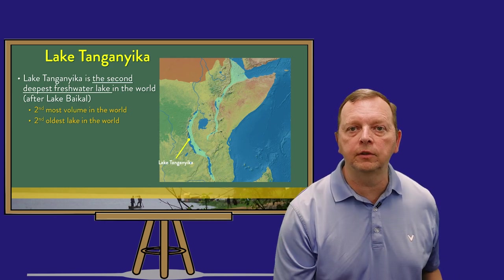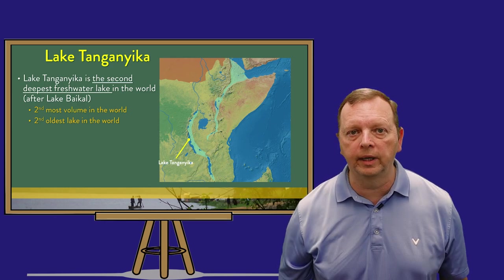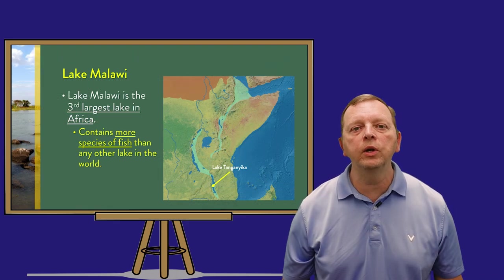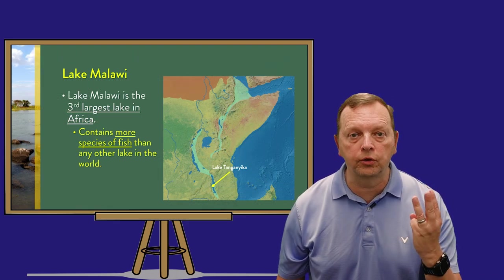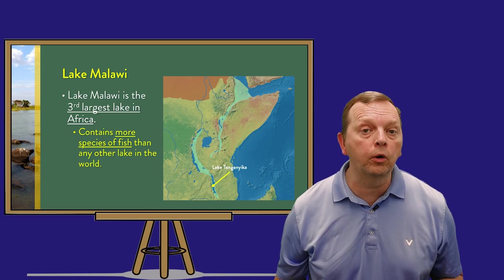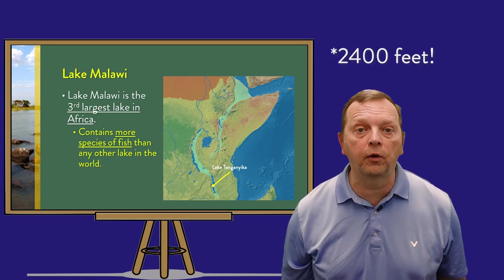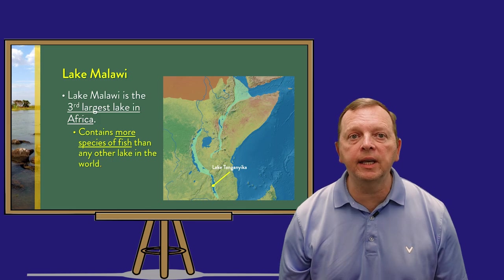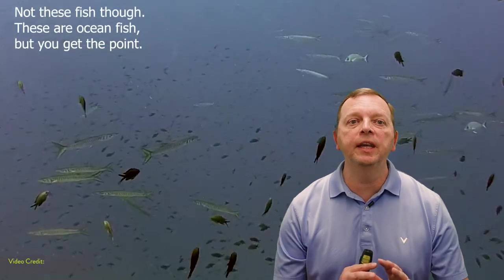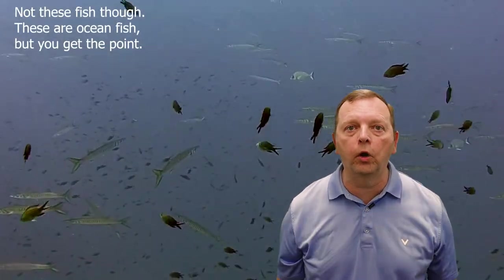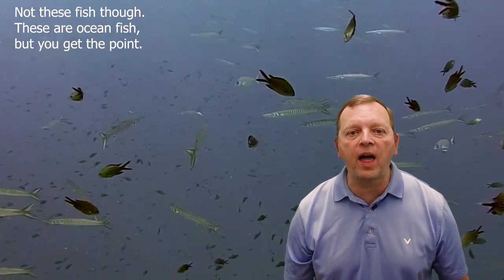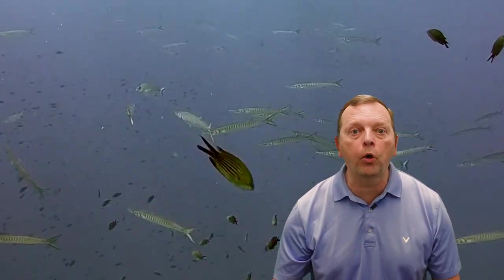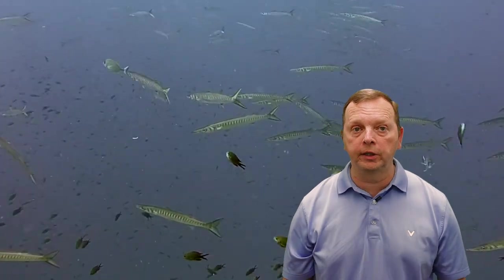Lake Baikal leads Lake Tanganyika in each of those three categories. To the south of Lake Tanganyika, we find Lake Malawi, which is Africa's third largest lake. It is also a rather deep lake at about 2,400 feet deep. What is special about Lake Malawi is that it has more species of fish in its waters than any other lake in the world — there are over 1,000 identified species, and more are being identified pretty much every year.